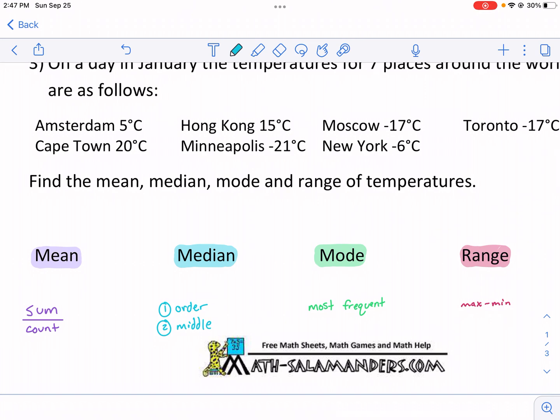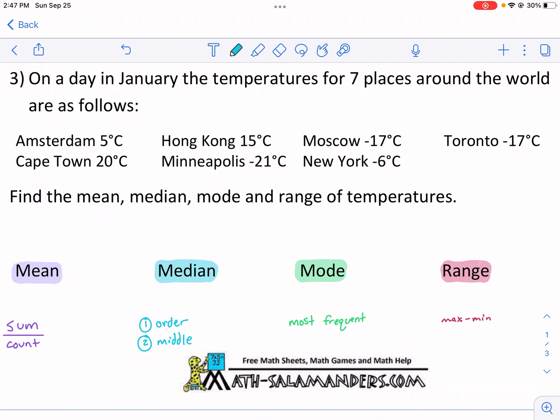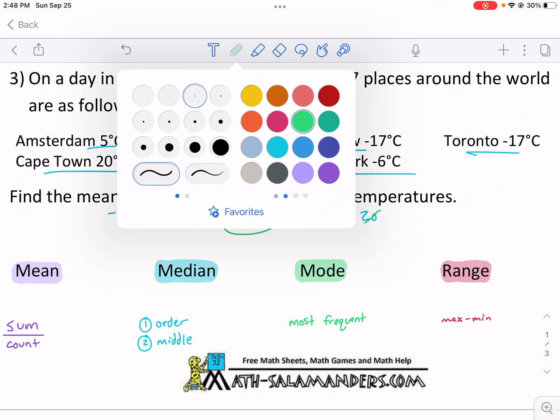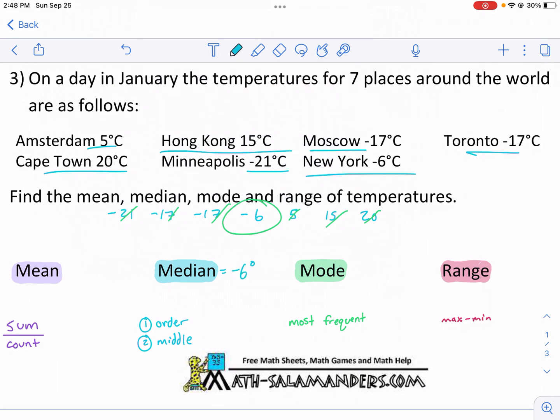You may think that 5 is the smallest, but it's not. The smallest here is negative 21. So I'm going to put negative 21 here, then negative 17 twice, then negative 6, then 5, Hong Kong 15, and Cape Town 20. Anytime you have an odd number, that means you're going to land on a middle. So our median is negative 6 degrees Celsius.